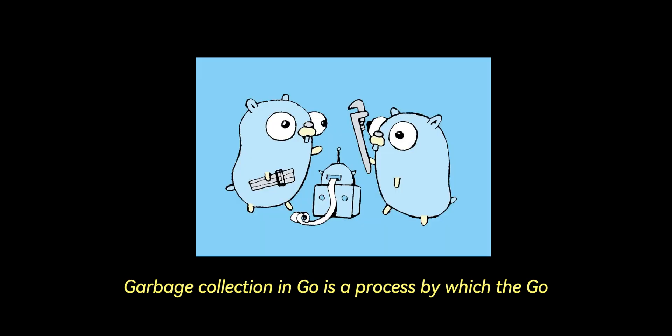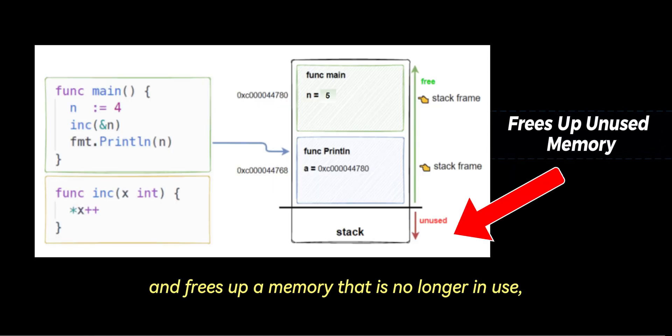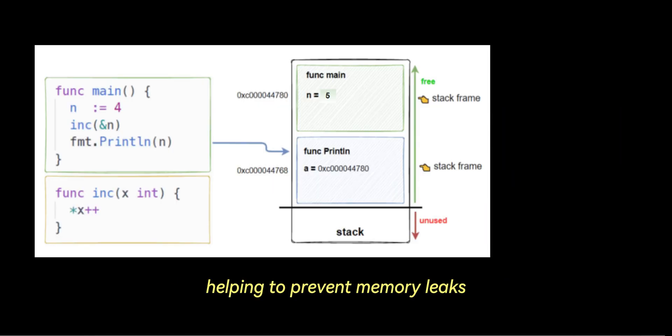Garbage collection in Go is a process by which the Go runtime automatically finds and frees up memory that is no longer in use, helping to prevent memory leaks and optimize application performance.